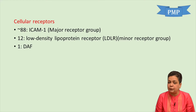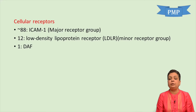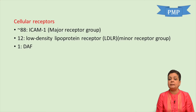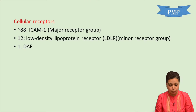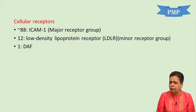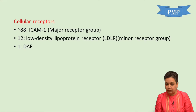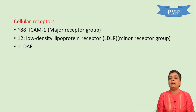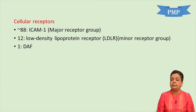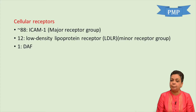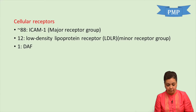The cellular receptor for the majority of rhinoviruses is intercellular adhesion molecule 1 (ICAM-1); these are called the major receptor group. For about 12 of them, the receptor is low-density lipoprotein receptor, called the minor receptor group. For one recently described serotype, the receptor is decay-accelerating factor.